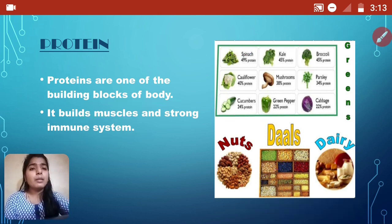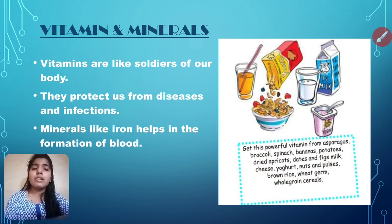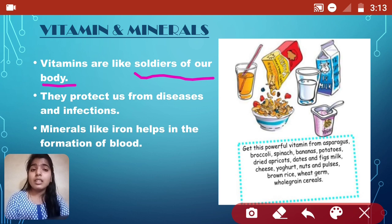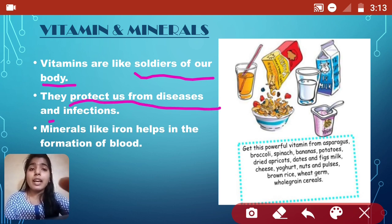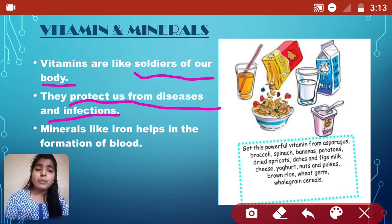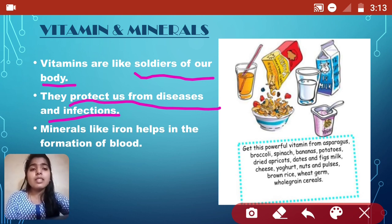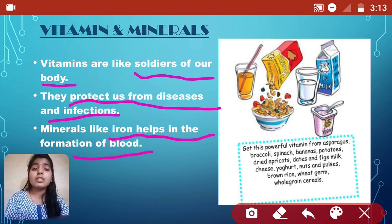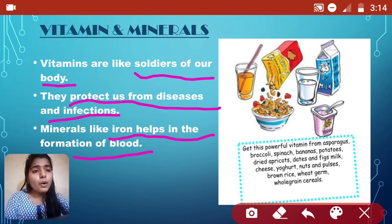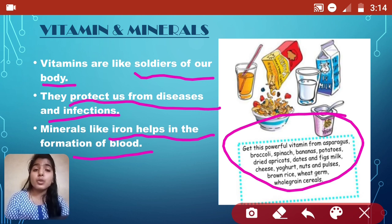Next important nutrients are vitamins and minerals. Vitamins are like soldiers for our body because they protect us from disease and infections, just like a soldier protects their country from enemies. Minerals like iron help in the formation of blood. We should have vitamins and minerals in our diet. Examples include broccoli, spinach, bananas, potatoes, cheese, yogurt, etc.